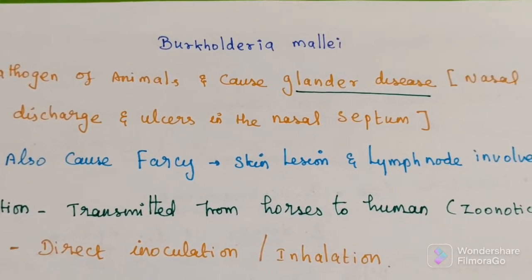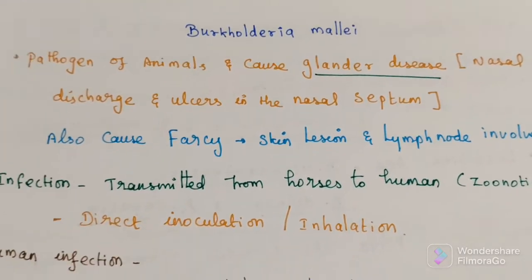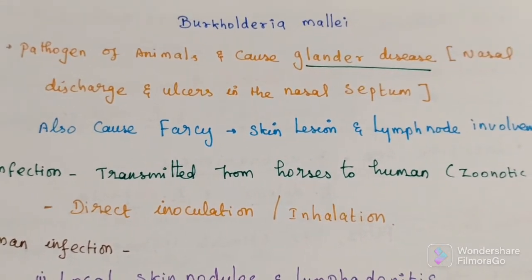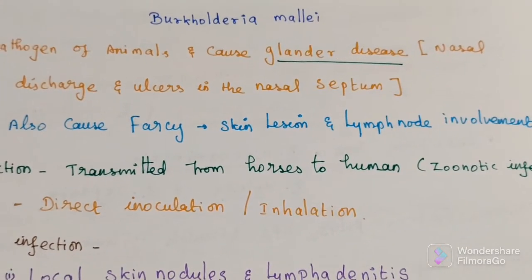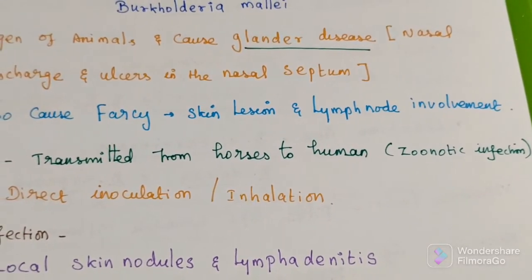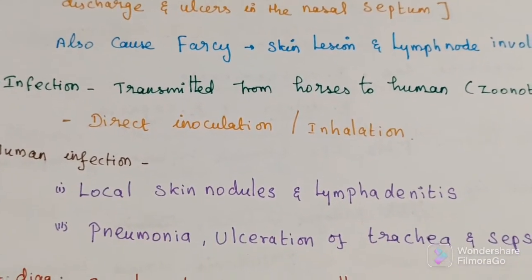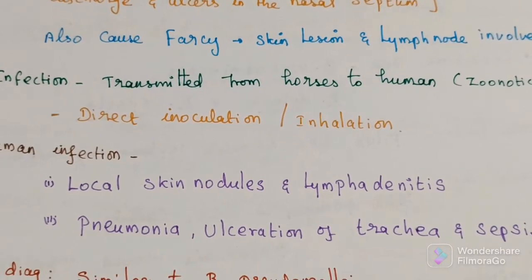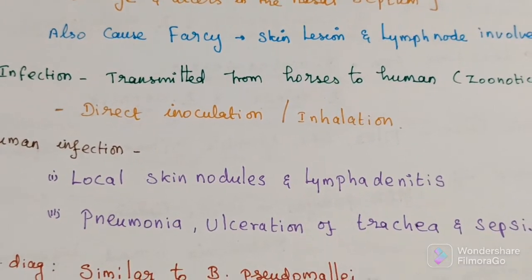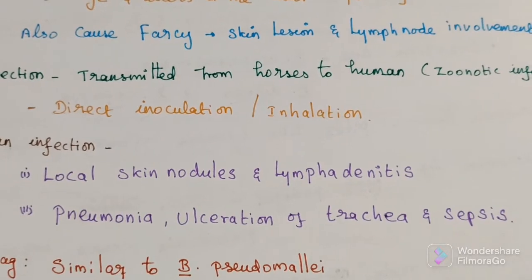It also causes a disease called Farcy, which involves skin lesions and lymph node involvement in animals. Infection can occur in humans, generally transmitted from horse to human, making it a zoonotic infection. Transmission occurs via direct inoculation or inhalation. Human infection presents as local skin nodules and lymphadenitis, which can progress to pneumonia, ulceration of the trachea, and sepsis.